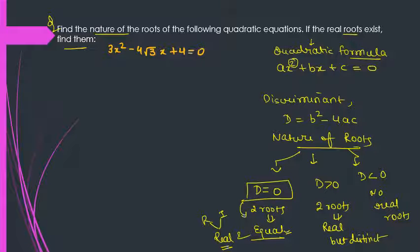So let's see. If you compare this with the standard form, what is a here? 3. What is b? Minus 4√3. And what is c? 4. With x², we have a. We have b here and c.